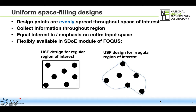The uniform space filling design we're using in phase one seeks to place the design points evenly throughout the space of interest, giving us the best shot of exploring that entire space. We can do this very flexibly using the uniform space filling designs in the Sequential Design of Experiments module in FOCUS, whether the design space is a regular rectangular region or an irregular region. In our case, we have an irregular region, but that's not a problem using this module.